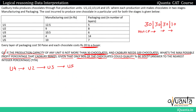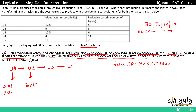Since only 90% of chocolates can be sold, we can sell 90 chocolates. Total SP = 90 × 20 = 1800 rupees. Total CP: 30 from U4 = 30 × 11 = 330; 30 from U2 = 30 × 13 = 390; 40 from U3 or U5 = 40 × 13.5 = 540. Total CP = 330 + 390 + 540 = 1260 rupees.